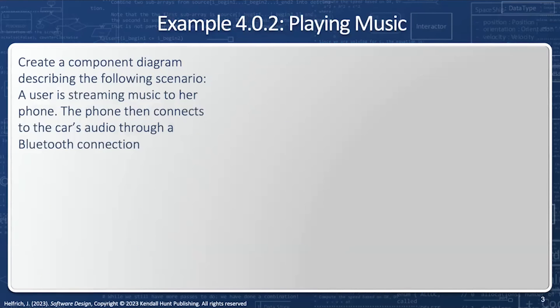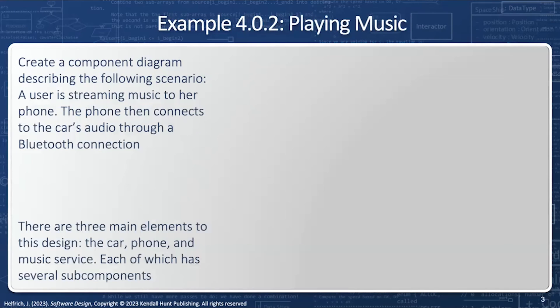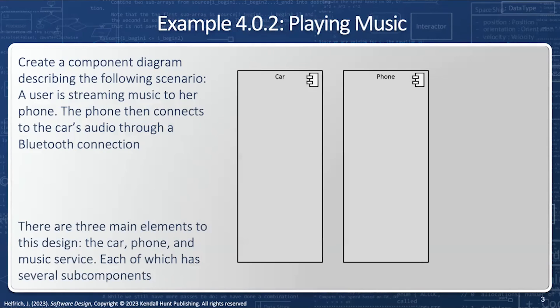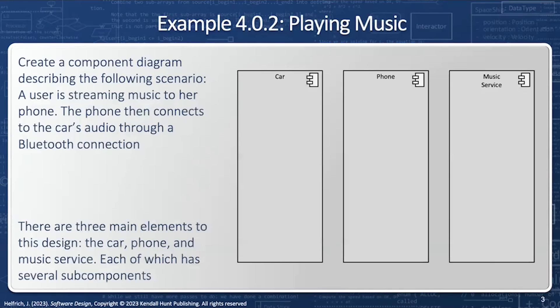Here's our second example: I want to play some music through my car. There are three main components — the car, the phone, and the music service — each of which has several sub-components. The car is a component, the phone is a component, and the music service is a component.